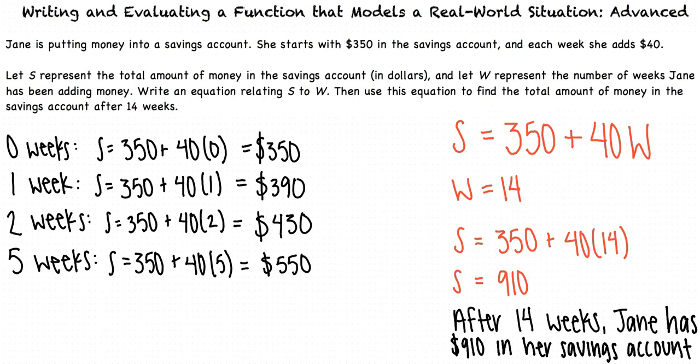I think I understand now. So, to write and evaluate a function that models a real-world situation, we use the information given to us in the question to first determine a function that represents the problem at hand. Then, using the equation along with given information, we solve for the unknown variable. That's exactly right. You seem to be getting the hang of this topic.